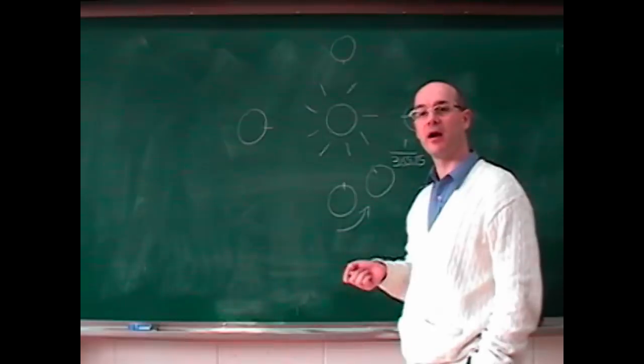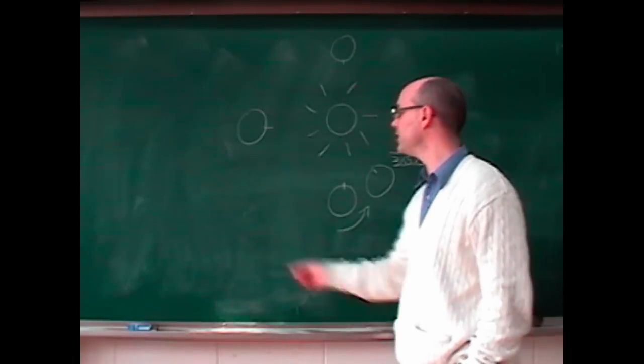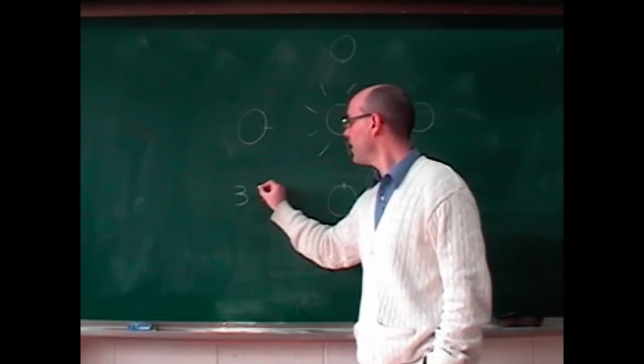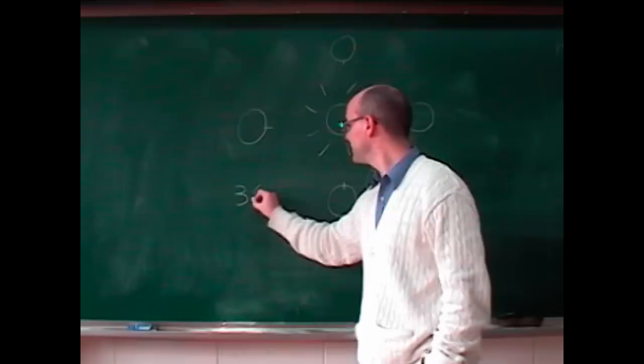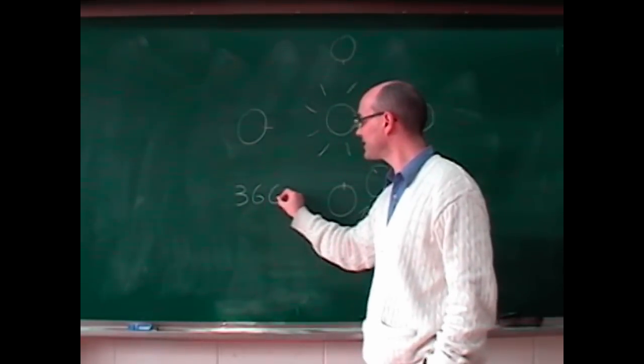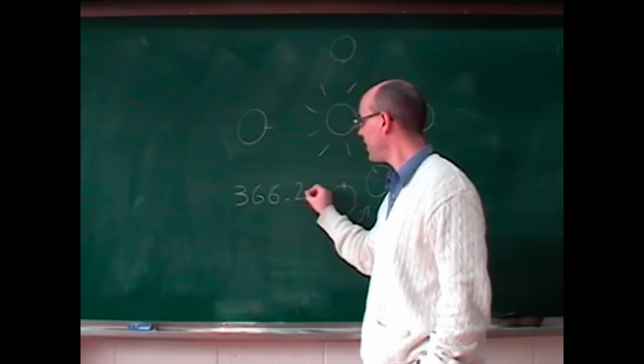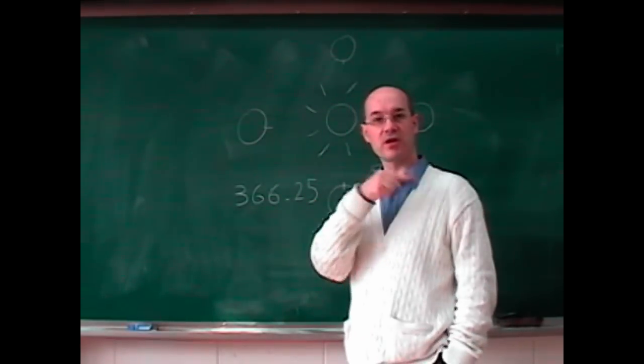in one year, the Earth will have made 366.25 revolutions around itself.